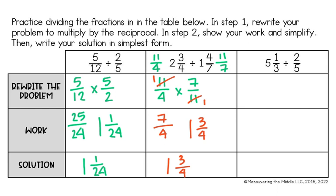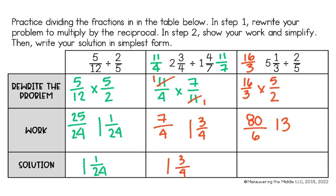The last one: I have 5 and 1 third divided by 2 fifths. I need to change my mixed number into an improper fraction, giving me 16 thirds divided by 2 fifths. I keep my first fraction, change my symbol, and flip my second fraction. 16 times 5 is 80, and 3 times 2 is 6. 6 goes into 80 thirteen times with 2 left over. Simplifying 2 sixths by dividing by 2, my final answer is 13 and 1 third.